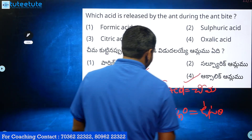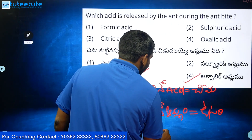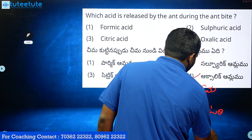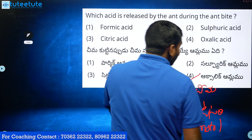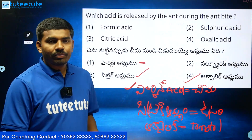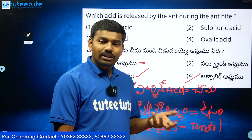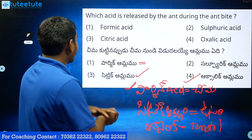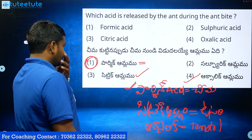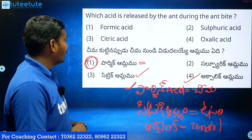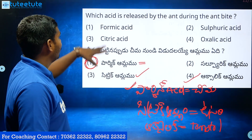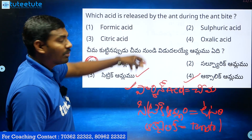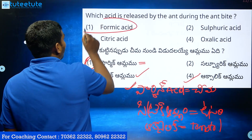Acids include: Citric Acid found in citrus fruits, Malic Acid, Tartaric Acid, and Formic Acid. Which acid is released by the ant during an ant bite? The answer is Formic Acid.